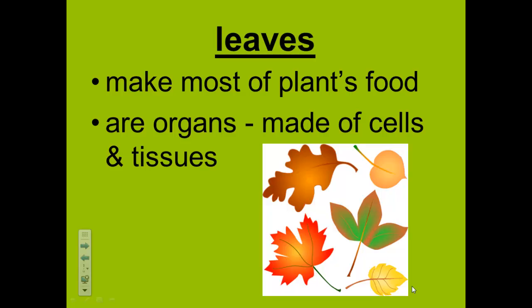Leaves are organs made of cells and tissues. The outside layer of flat cells is the epidermis. In some ways, this tissue is similar to the top layer of your skin, which is also called the epidermis. It helps protect the plant.